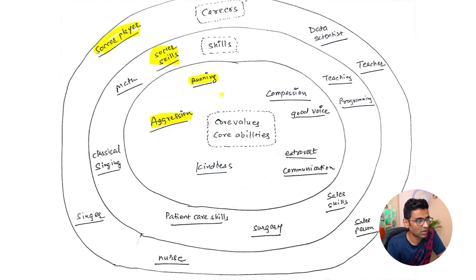Now the career progression is bottom up. So you are starting with your core abilities, core values and you're going up in this direction. If I have to plot an arrow it will look something like this.